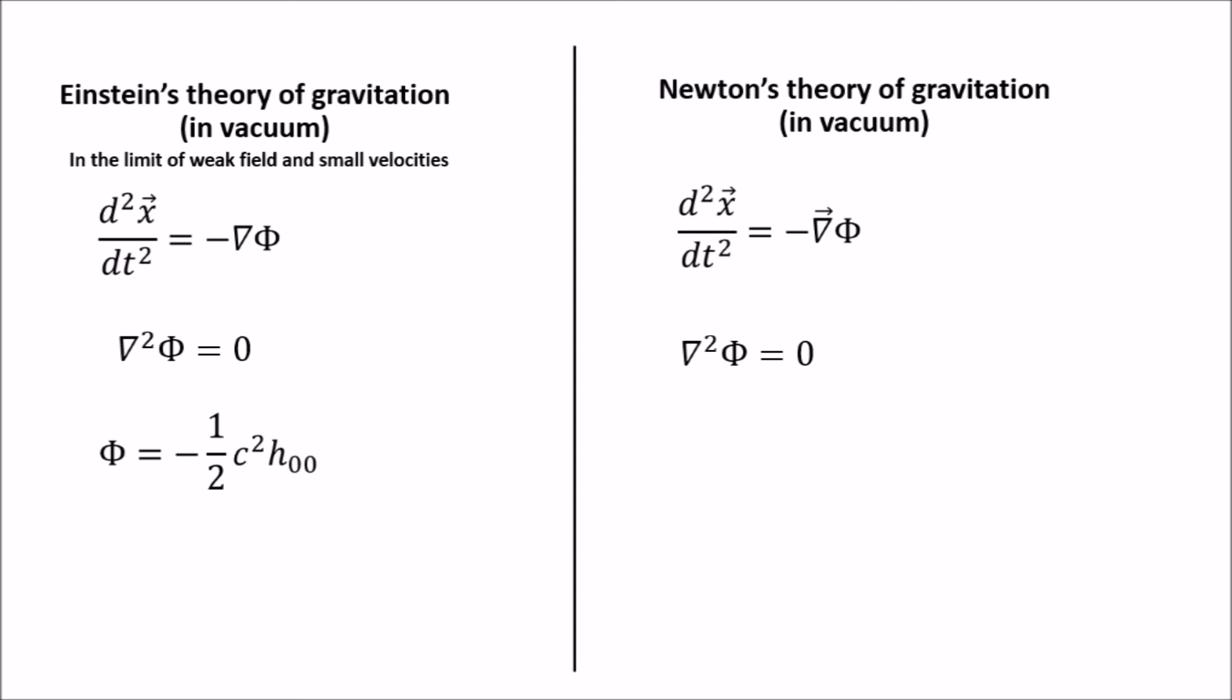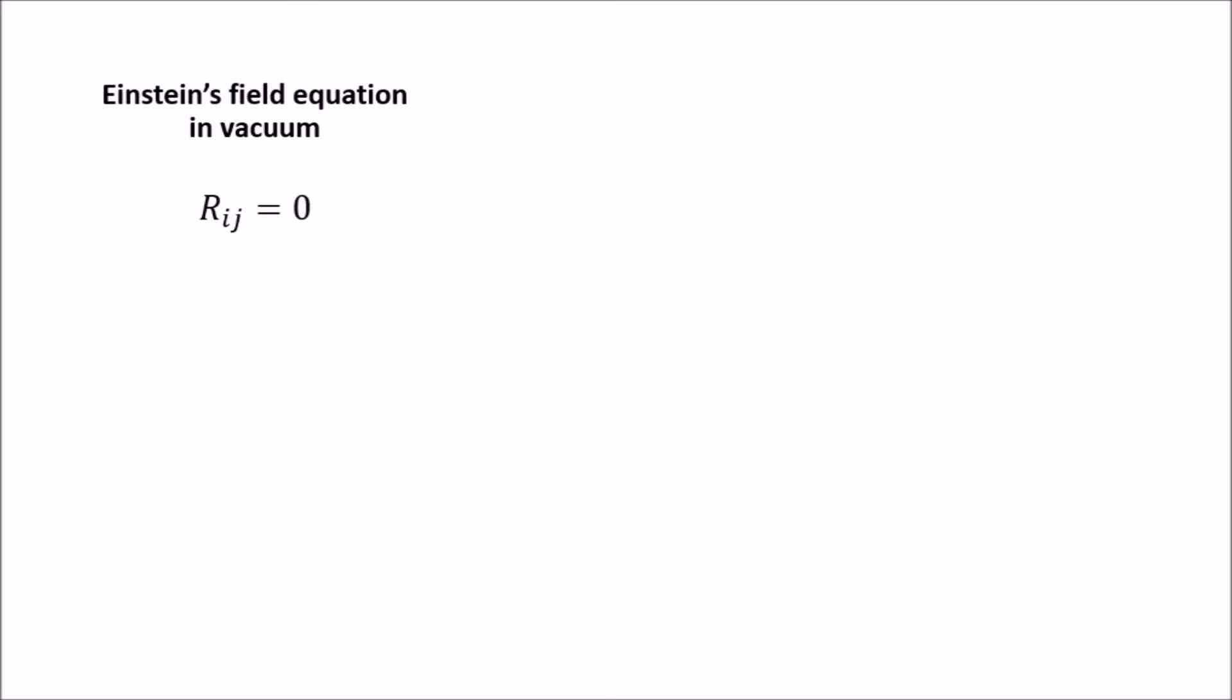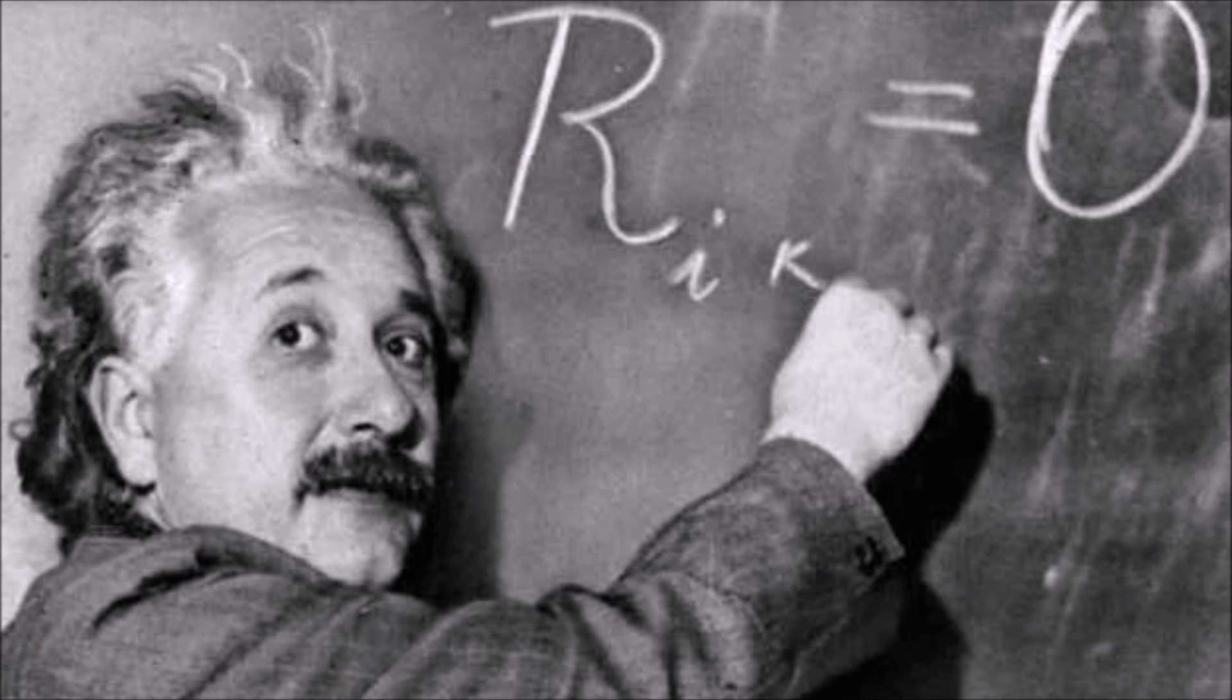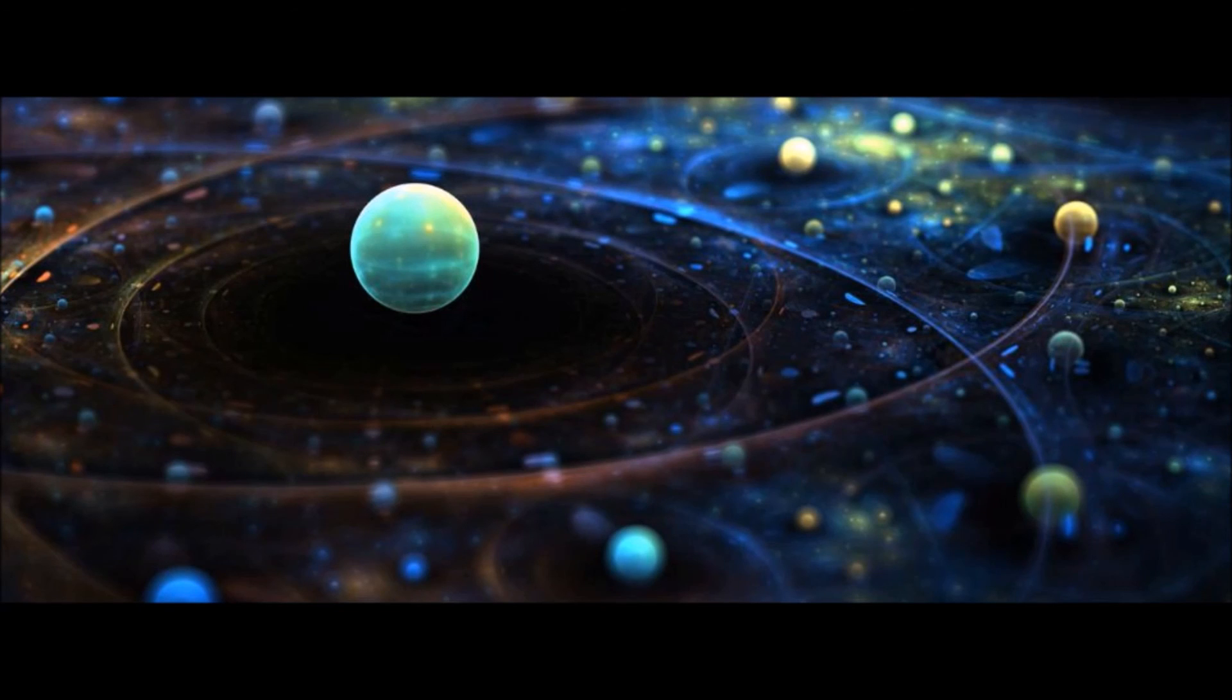So, it seems that the vanishing of the Ricci tensor is a good candidate for the correct theory of gravitation. This simple-looking equation is called Einstein's field equation in vacuum. However, correct behavior of a theory and a particular set of limits does not prove the theory's validity, only that it is plausible. In order to demonstrate that the theory is valid, it must be capable of new predictions. In the next video, we will look at a couple of such predictions by solving this equation exactly.